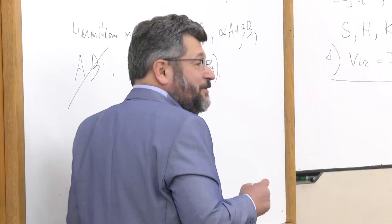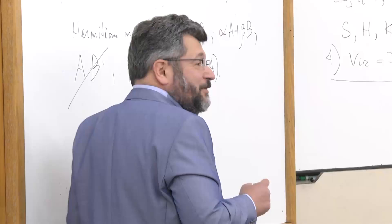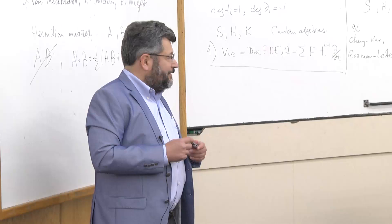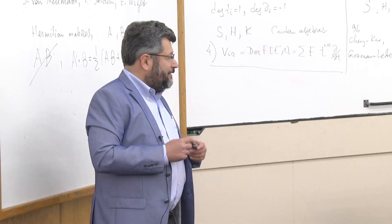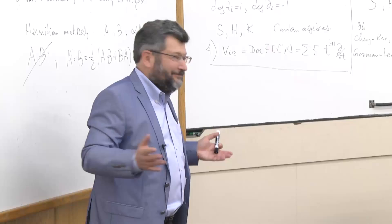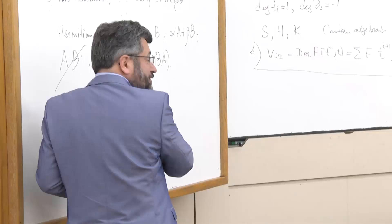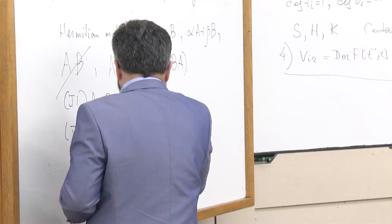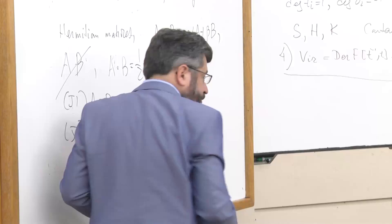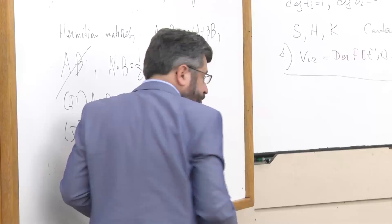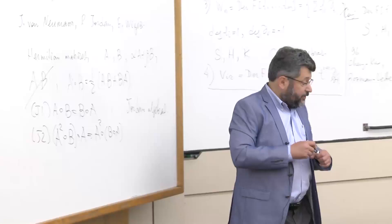For the most important properties, they chose two: commutativity, and the second one — now called the Jordan identity — a sort of weak associativity. Algebras with these properties are called Jordan algebras. Let me mention some examples: if you take an arbitrary associative algebra and replace the ordinary multiplication by commutation, you get a Lie algebra; if you replace it by anticommutation, you get a Jordan algebra.